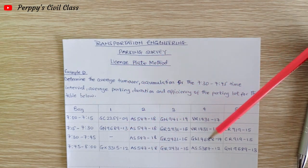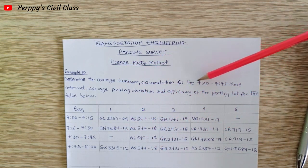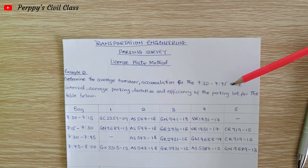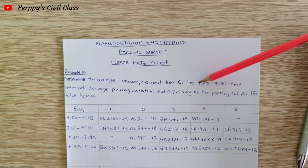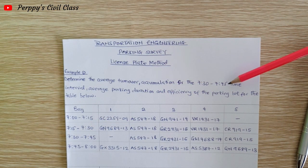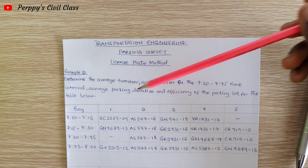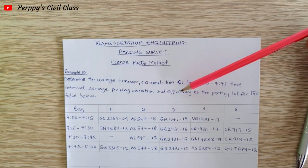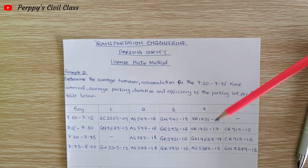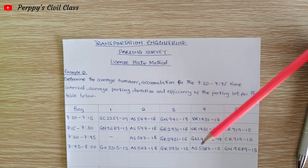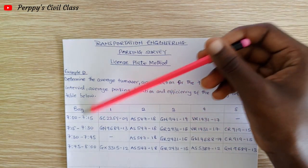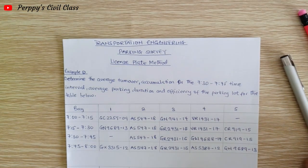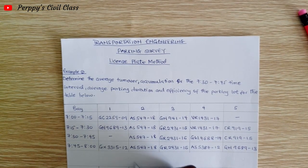Between 7:45 to 8:00, all five bays had cars parked. We need to determine the average turnover for all the bays, the accumulation for the 7:30 to 7:45 time interval, the average parking duration for all bays, and the efficiency of the parking lot.